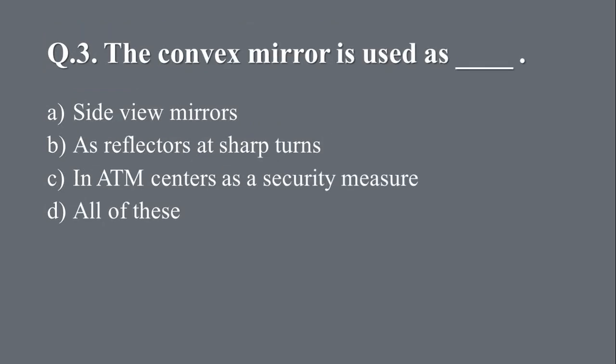Question 3: The convex mirror is used as blank. Option A, side view mirrors. B, as reflector at sharp turns. C, in ATM centers. D, in ATM centers as a security measure. And D, all of these. The right answer is C, in ATM centers as a security measure.